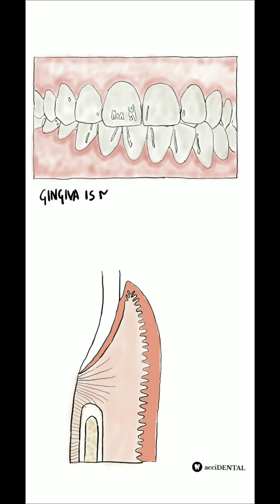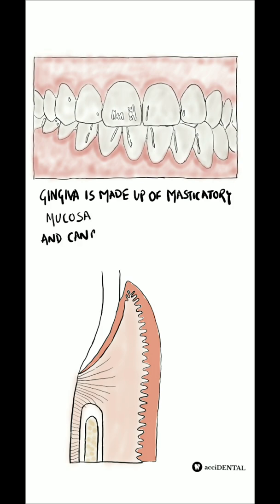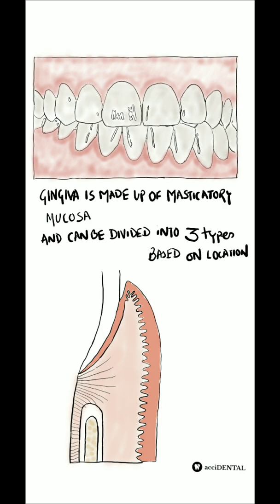Our oral cavity is lined by the oral mucous membrane which is divided into three zones: the masticatory mucosa, specialized mucosa, and the lining mucosa. The gingiva is covered by the masticatory mucosa and is divided into three types anatomically based on their location.